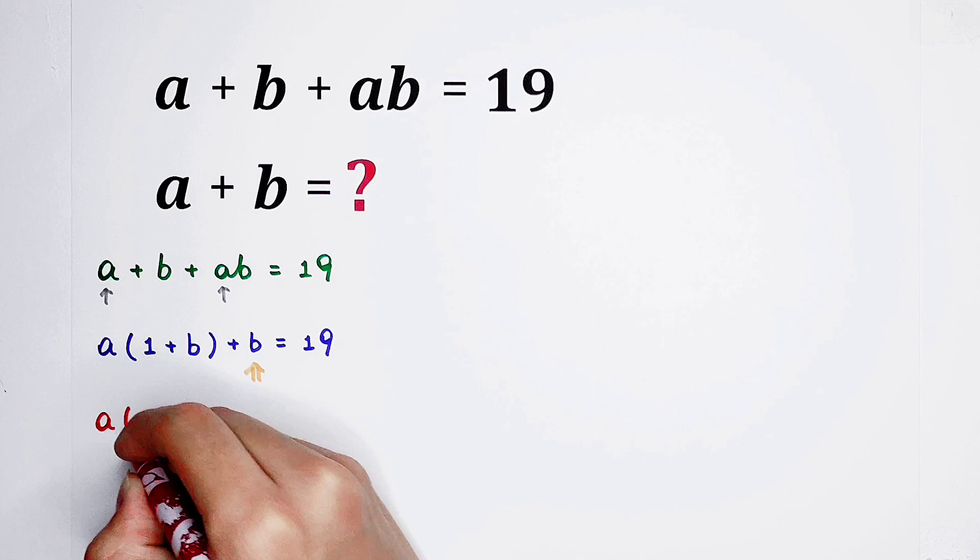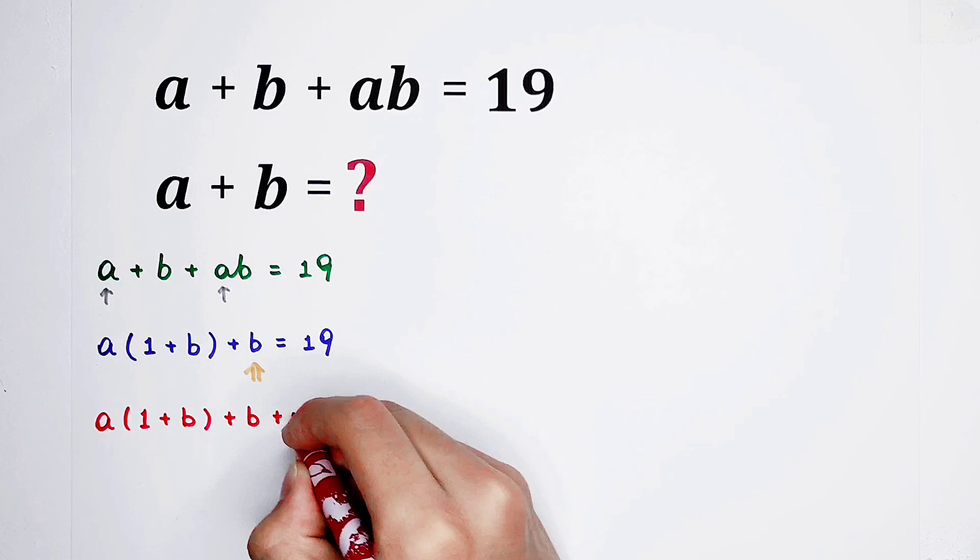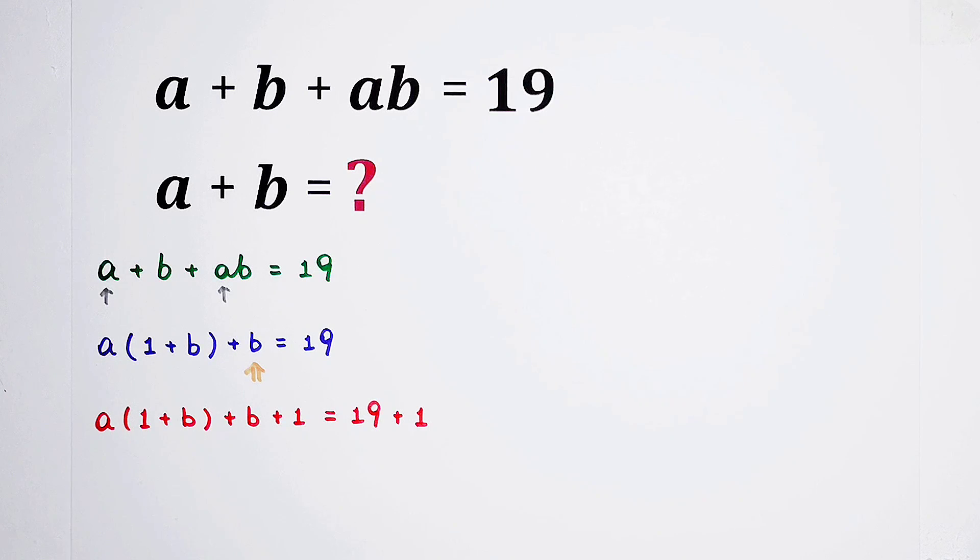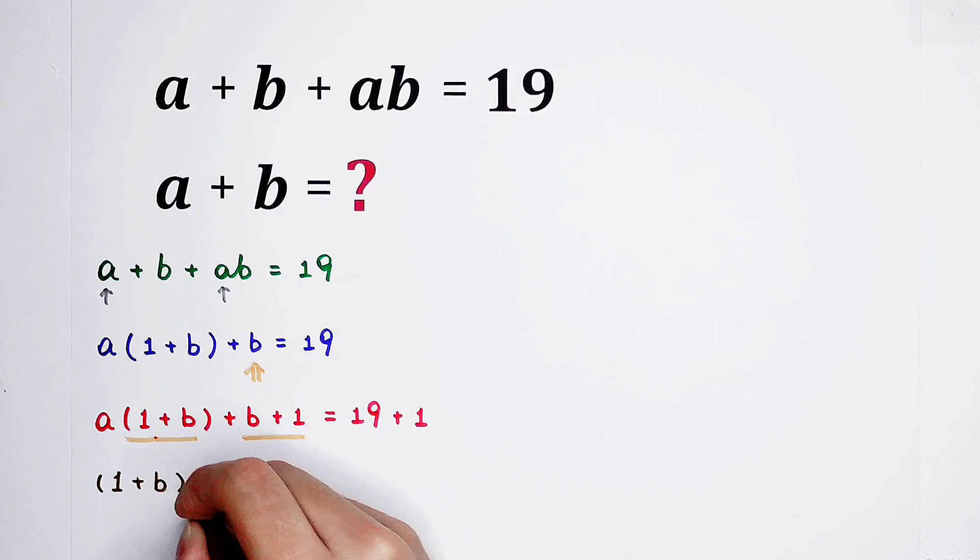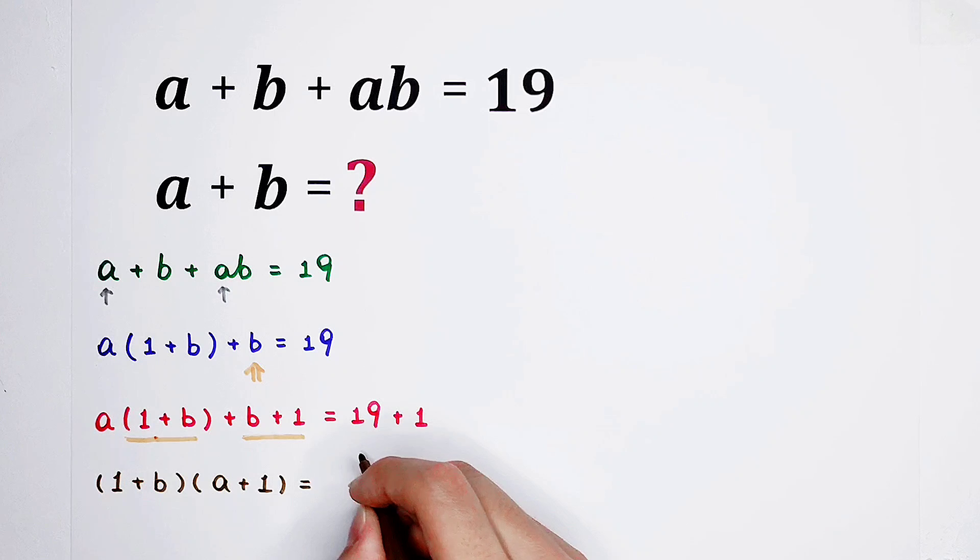The left side will be A times 1 plus B and then plus B plus 1. The right side, 19 plus 1. We've created a 1. So here, we have B plus 1, 1 plus B. They're actually the same thing. So if you take out 1 plus B, here is A, here is 1. And the right side is 20. We've done. Although the right side is not 19 anymore, the left side has been successfully factorized.